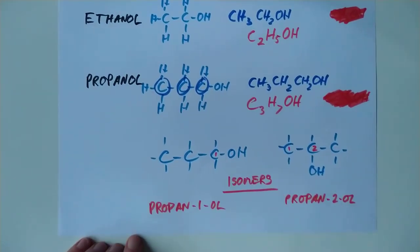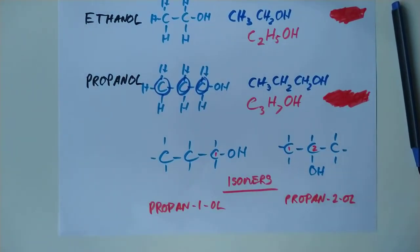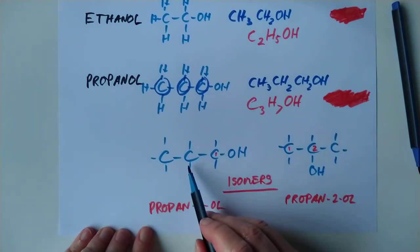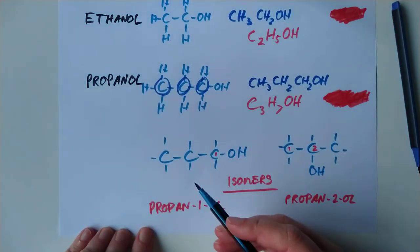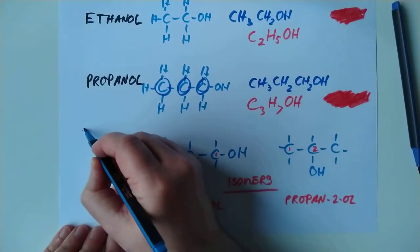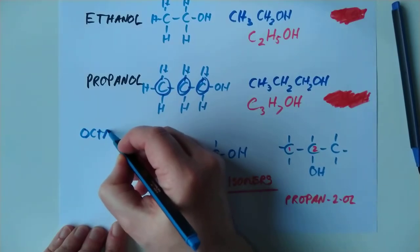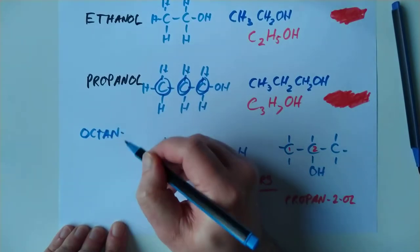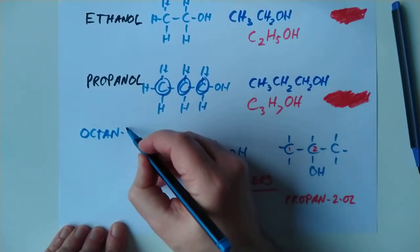Two things just before we leave this sheet. I'm wondering if you can tell me what the general formula for this is, because this is a homologous series after all. But before we get to that, I would like to remind you about something I forgot to mention, which is, in the shortened structural formula, if you have lots of CH2s in the middle, like you would with octanol, you can bundle them together. Octan-1-ol.